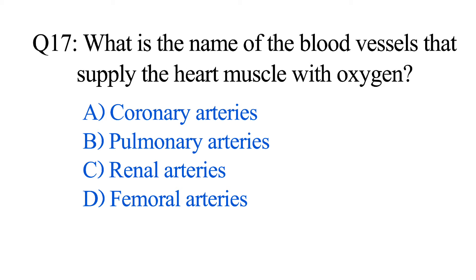Question number seventeen. What is the name of the blood vessels that supply the heart muscle with oxygen? Option A: Coronary arteries. B: Pulmonary arteries. C: Renal arteries. D: Femoral arteries. The correct option is Option A: Coronary arteries.